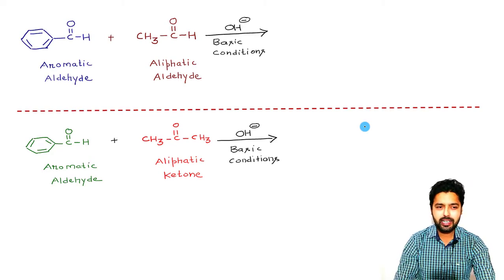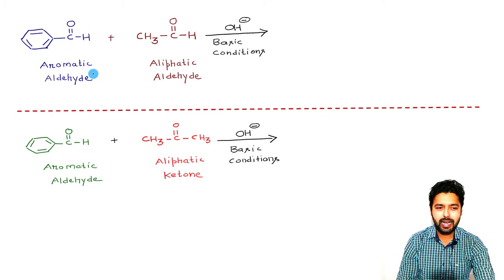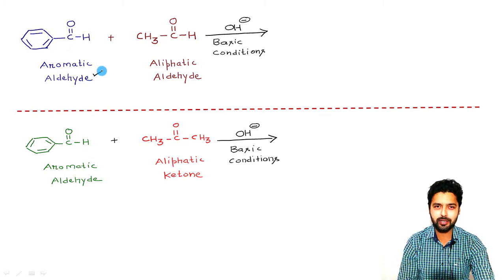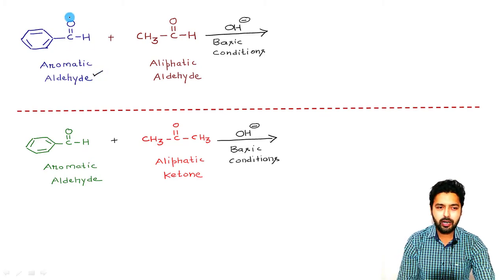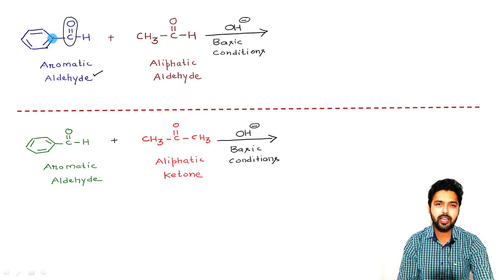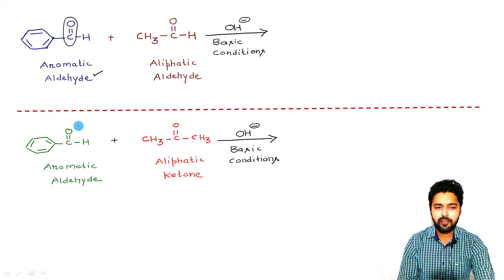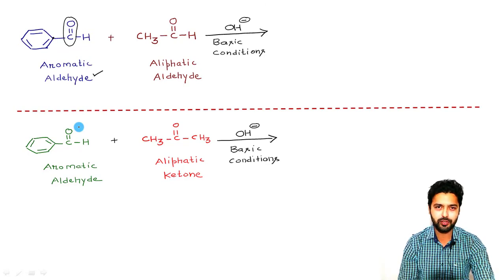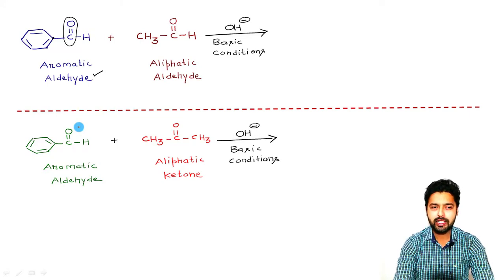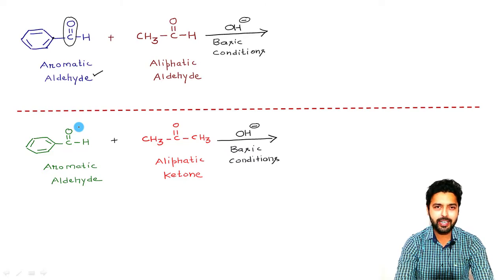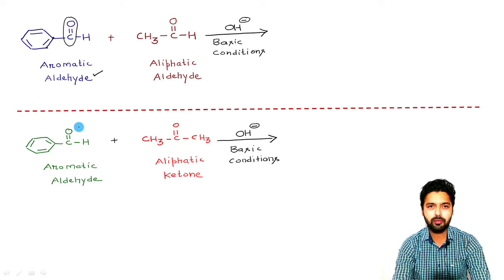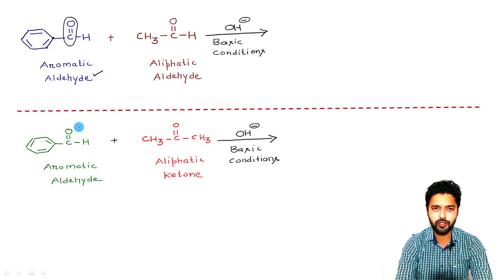The first reactant molecule is an aromatic aldehyde which lacks the alpha hydrogen atoms. Onto this carbonyl group, this is the alpha position here and it is not having any alpha hydrogen atom. Even in the second reaction here, the same aromatic aldehyde has been used which does not contain the alpha hydrogen atoms.